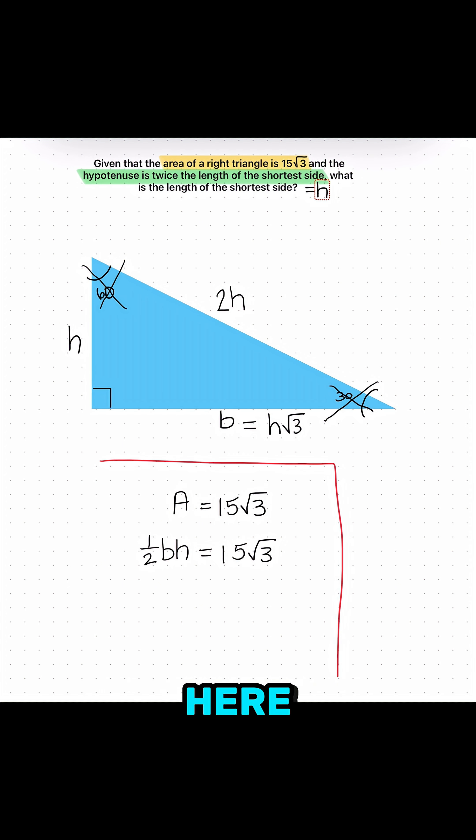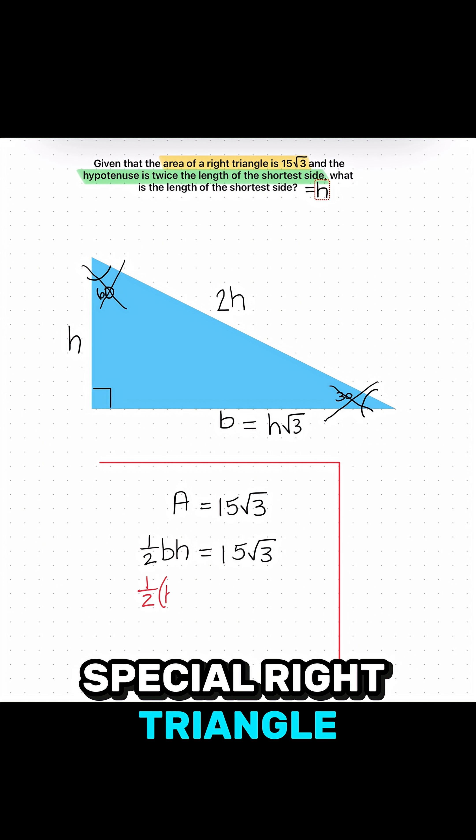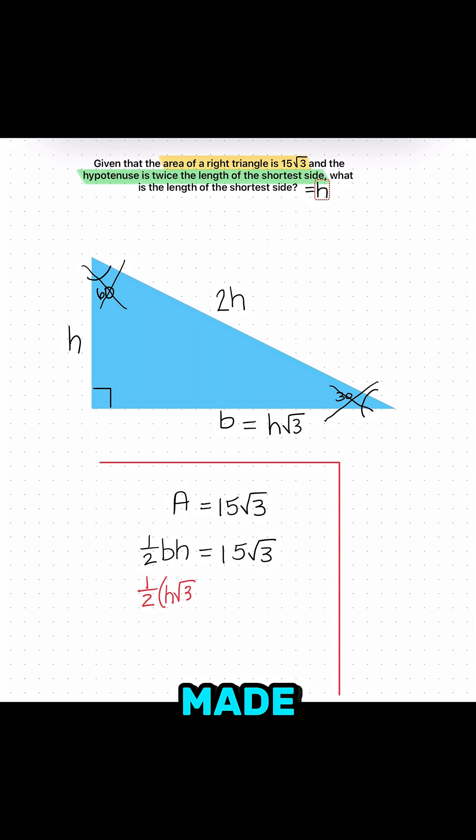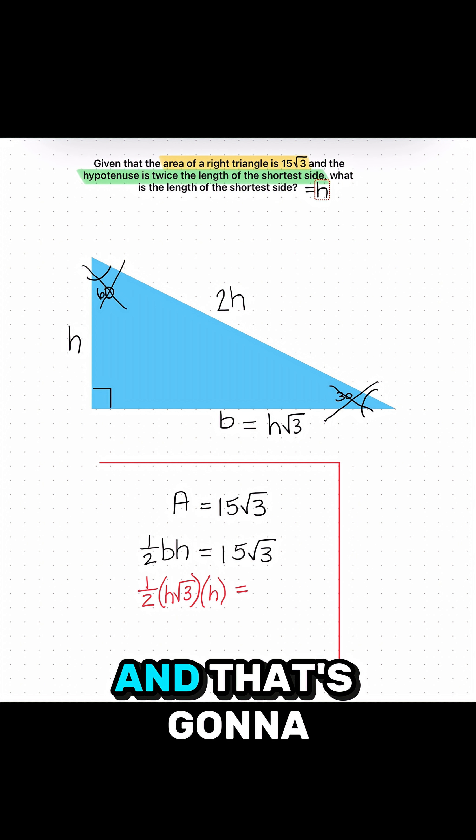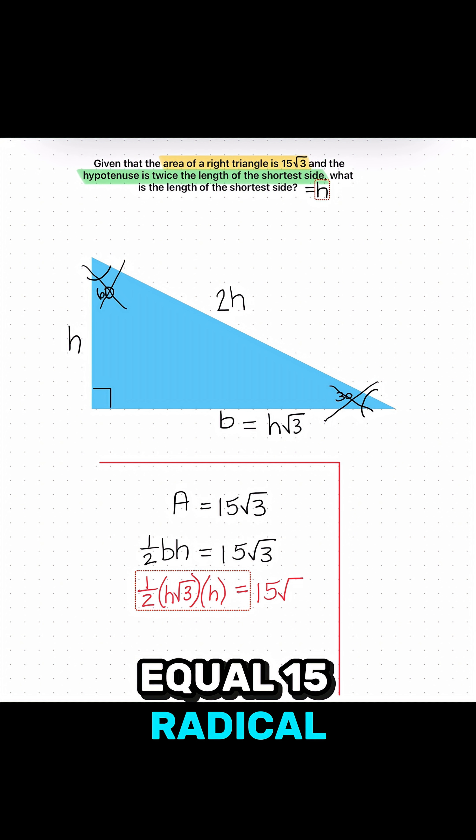So I can now go down here to the situation that I've set up and fill this in. So I have one half. Remember, the base, due to the special right triangle discovery that we've made, the base is the height times radical 3. And then the height is just going to be the height. And that's going to equal 15 radical 3.